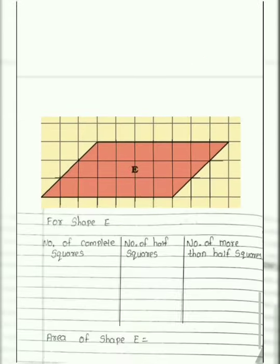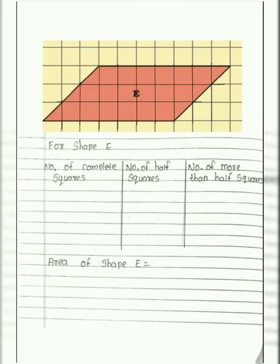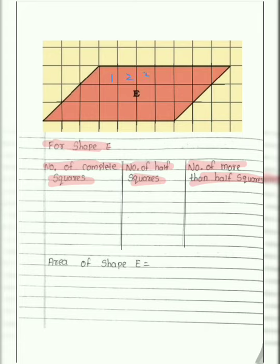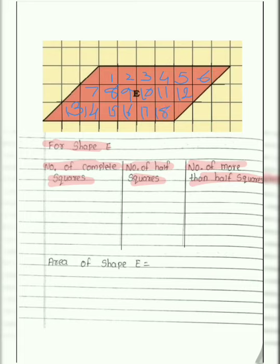Our next shape is shape E. We will start with the statement for shape E and draw 3 columns: number of complete squares, number of half squares, and number of more than half squares. We count the complete squares: 1, 2, 3, 4, 5, 6, 7, 8, 9, 10, 11, 12, 13, 14, 15, 16, 17, and 18. There are 18 complete squares. We write 18.